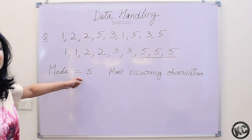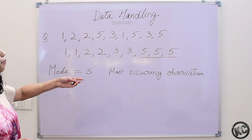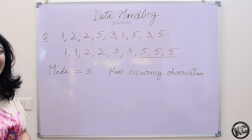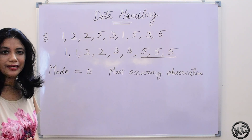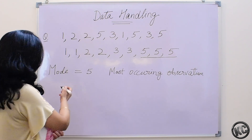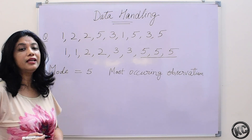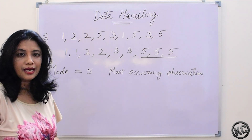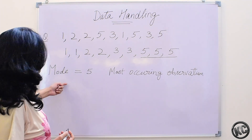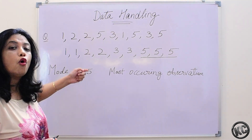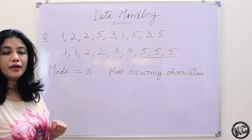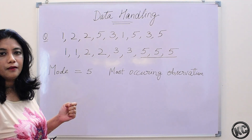This observation is occurring more number of times, more frequently in our data, so this is called the mode of the data. Mode of the data will always be a number in the data.